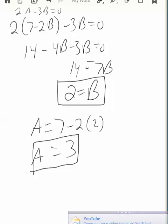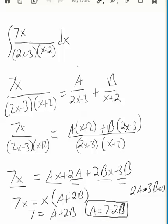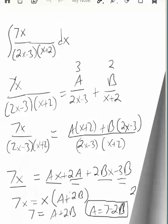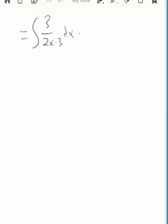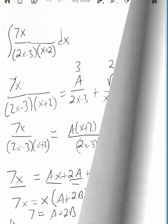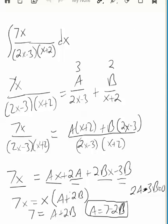B is 2. And now we can go back and substitute in. So A is 3, B was 2. Let's clean that up. So 3 over 2x minus 3, that's one part. And then B was 2, so 2 over x plus 2. Let me just make sure I got that all right. 3 over 2x minus 3, 2 over x plus 2. Okay, we got it.